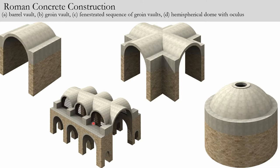At the bottom left we see what is called a fenestrated sequence of groin vaults — fenestrated just means it has windows. To allow in light similar to the clerestory windows we saw in ancient Egypt, the Romans used this fenestrated groin vault. On the right, we see a dome — a dome is just an arch that is spun around 360 degrees. All of these forms are based on the same principle: equal and outward distribution of weight. This is going to allow the Romans to achieve literally great heights in architecture.